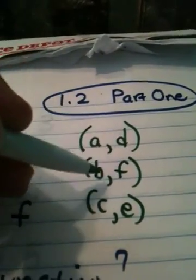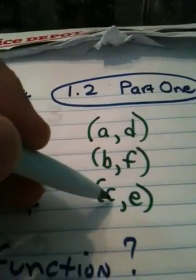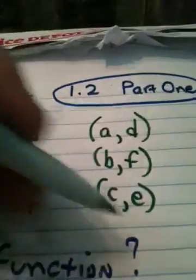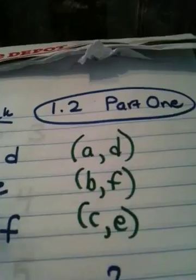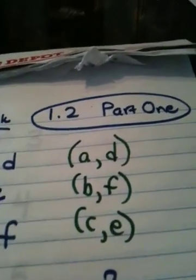In this case, A has kept D, B has kept F, C has kept E. Nobody's changed their mind. So in other words, no x value has made a different choice for y. The answer is yes, it is a function.